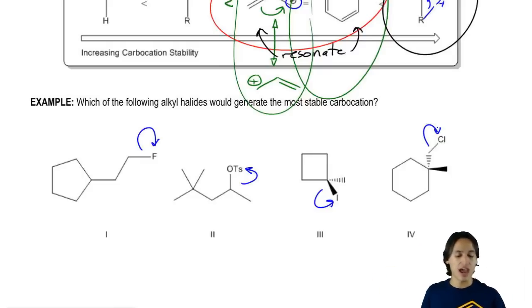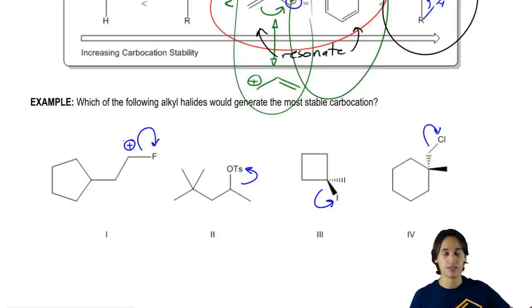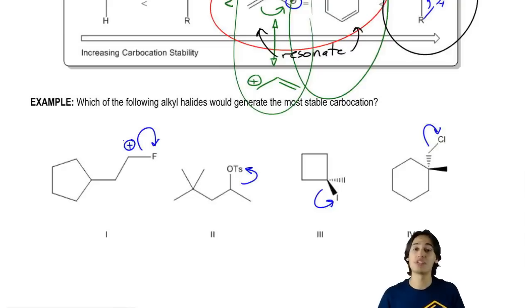So what you need to do is think after this F leaves and becomes an F negative and I get a positive charge here, what kind of carbocation would that be? Do the same thing with all four of these and then figure out which of them is going to be the most stable carbocation. Go ahead and try to solve this question and then I'll answer it.